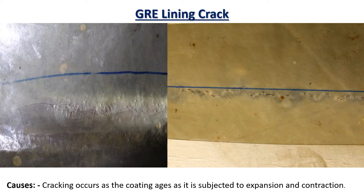Lining cracks occur when the tank bottom plates have any kind of settlements during service. Because the GRE lining is very brittle, any kind of expansion or contraction can make cracks on the lining. These cracks can allow the product to contact with the substrate materials, leading to corrosion.